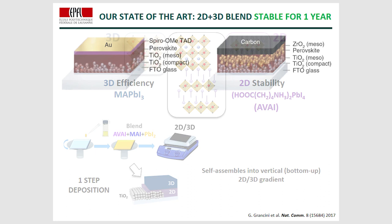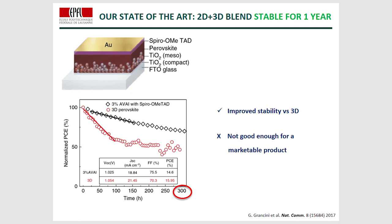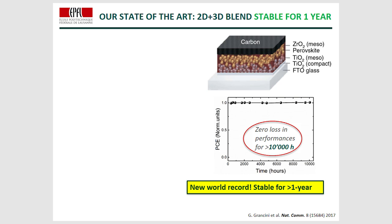Two different types of device architecture were prepared. The first includes a hole transporting material — spiro — and gold as an electrode. In the second device architecture, the HTM and electrode were replaced by a carbon matrix. For the first device, an efficiency very similar to that of the 3D was obtained for the 2D-3D perovskite; however, the stability was improved to up to 300 hours. In the case of the carbon matrix, a really high stability was obtained — more than one year with zero loss in performance. This was a world record and a really important result in the perovskite field.